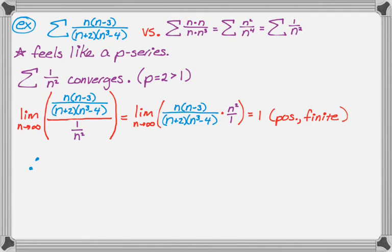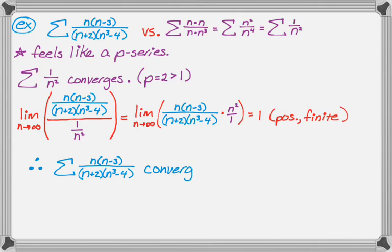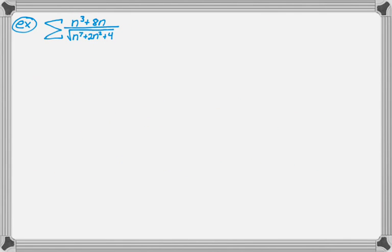Therefore, the original series does the same thing as the series I constructed, so it must converge — by the limit comparison test. I'm going to do two more examples so you can see how we go through these, and I'll skip the detailed limit computation since that's not really the big deal with this test.